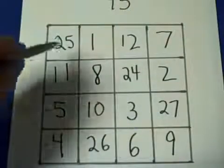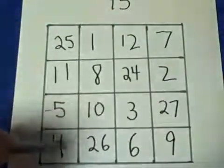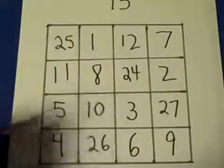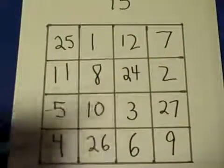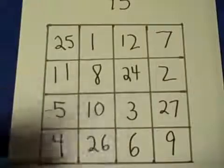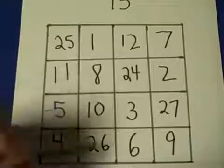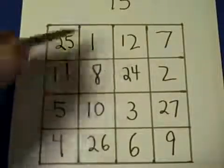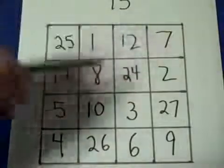If you add the 4 corners, the numbers add up to 45. If you take any block of 4 squares, a 2 by 2 block, these numbers will add to 45, these numbers will add to 45, these numbers will add to 45.